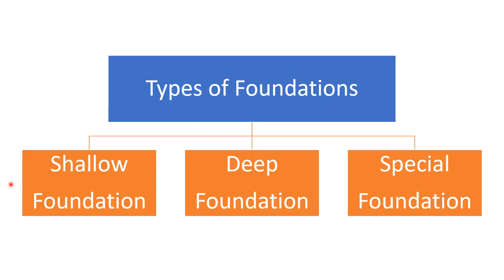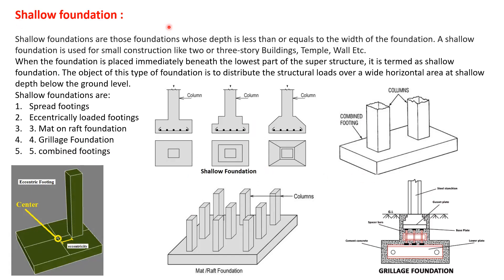There are three types of foundations: shallow foundation, deep foundation, and special foundation. Shallow foundations are those whose depth is less than or equal to the width of the foundation. They are used for small construction like two or three storey buildings, temples, or residences. When the foundation is placed immediately beneath the lowest part of the superstructure it is termed a shallow foundation. The object is to distribute structural loads over a wide horizontal area at a shallow depth below ground level. Types include spread footing, eccentrically loaded footing, mat or raft foundation, grillage foundation, and combined footings.